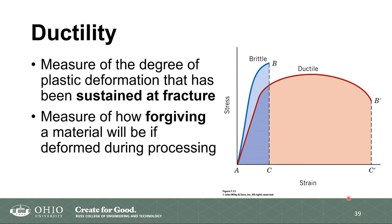Another qualitative way to think about ductility is how forgiving the material will be when you deform it — the material can undergo a lot of strain before it fractures. The stresses give us a measure of strength, while ductility is related to the strain value along the x-axis. Quantitatively, percent elongation gives a measure of ductility: large percent elongation means very ductile, small percent elongation means brittle.